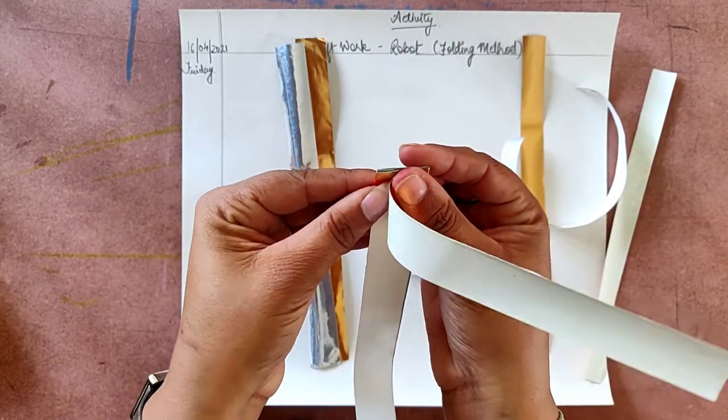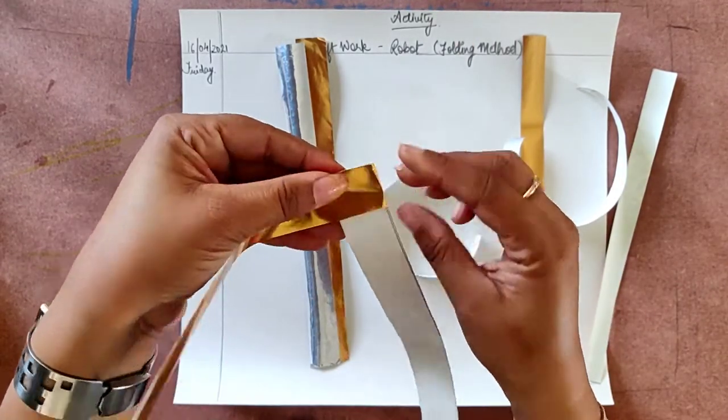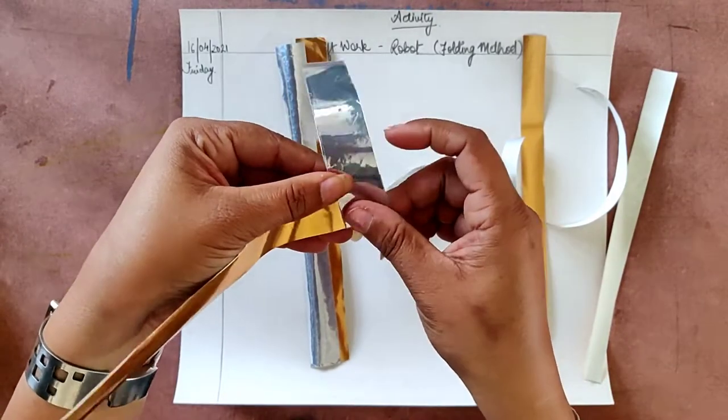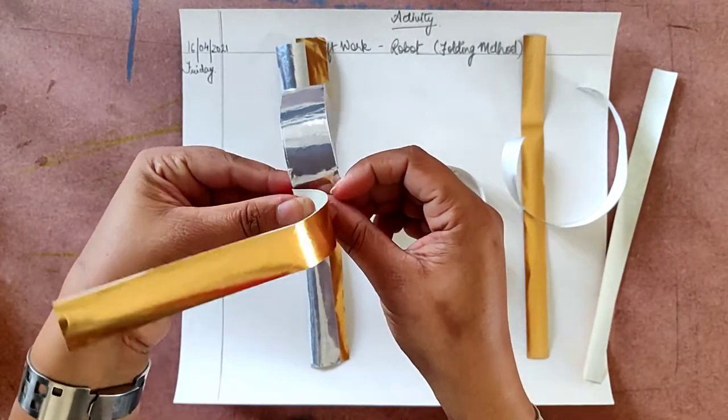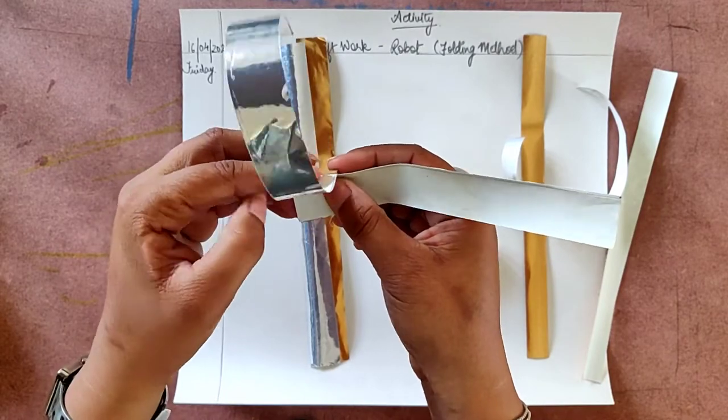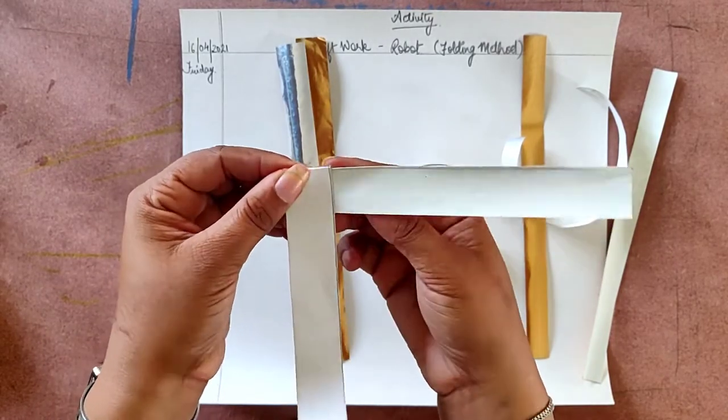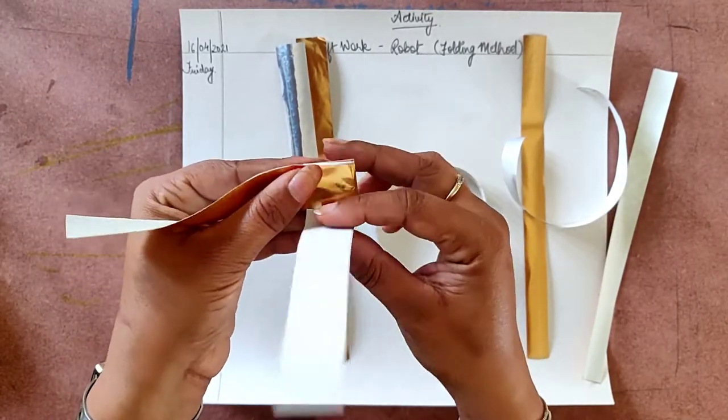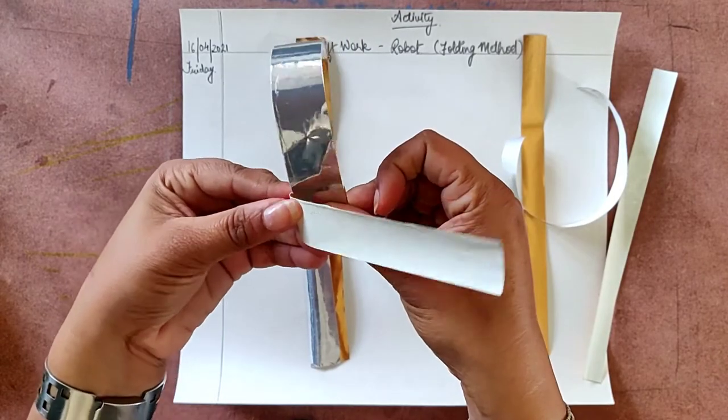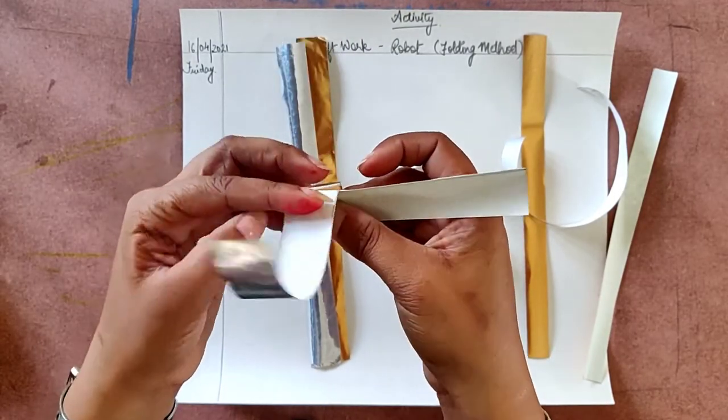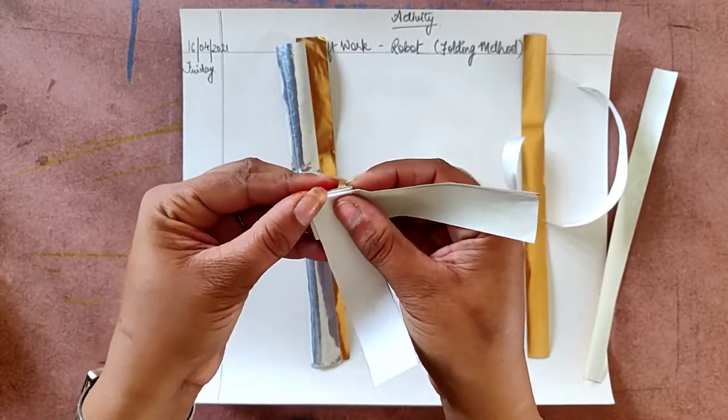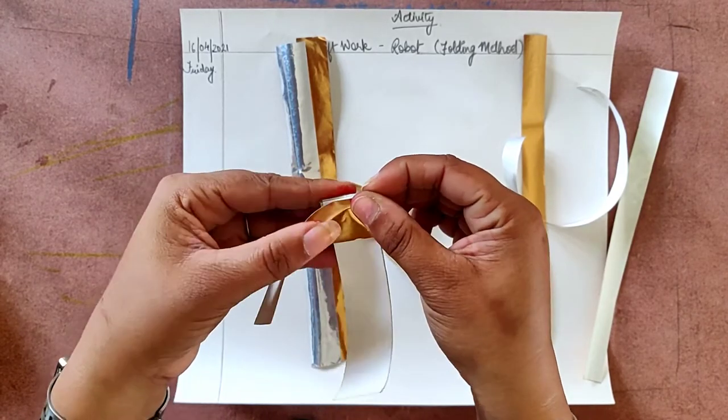Now, I will go under and then I will go with it. Like this, criss-cross. This way you have to make. Criss-cross way. You have to do the folding work.